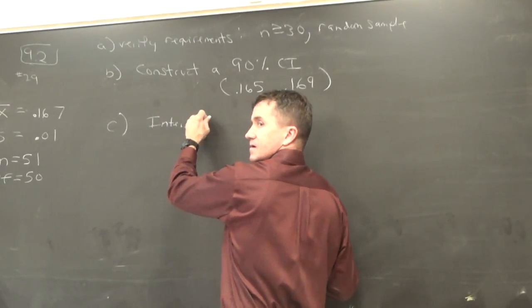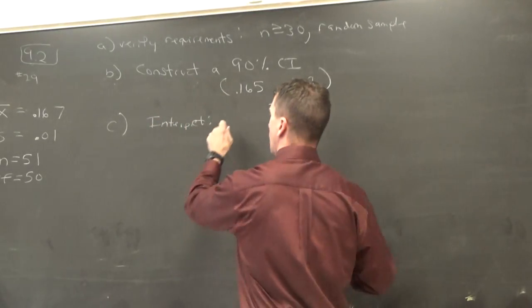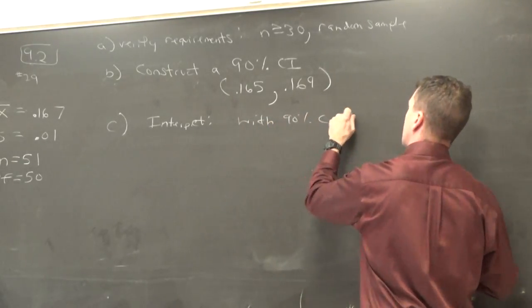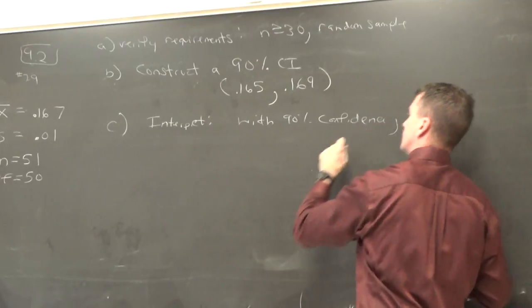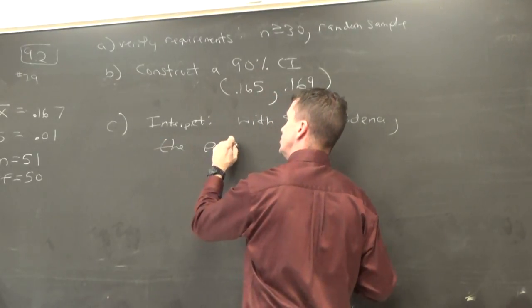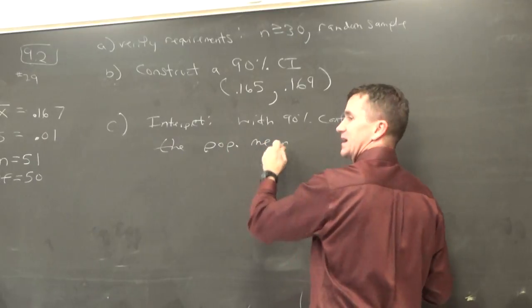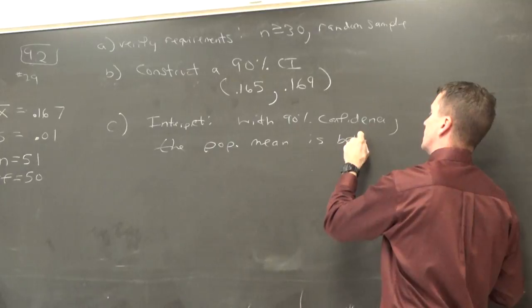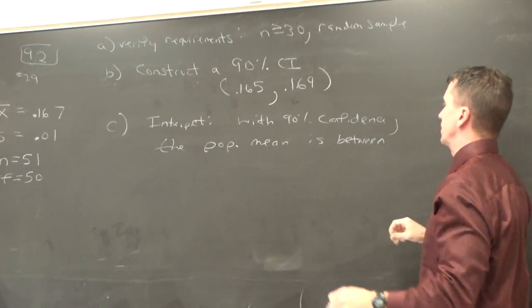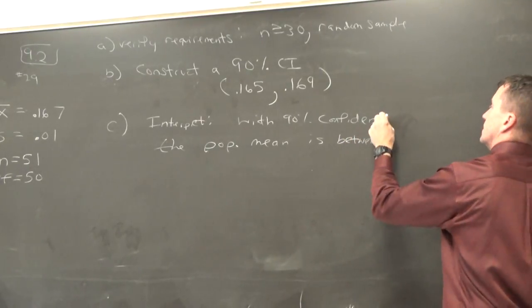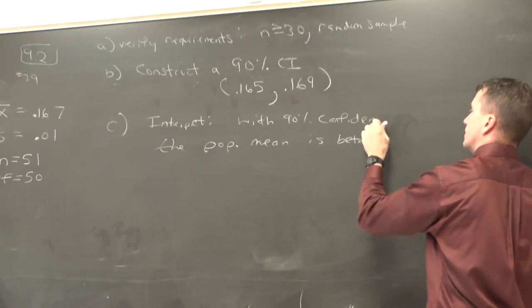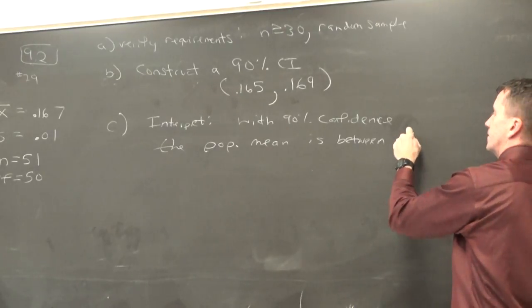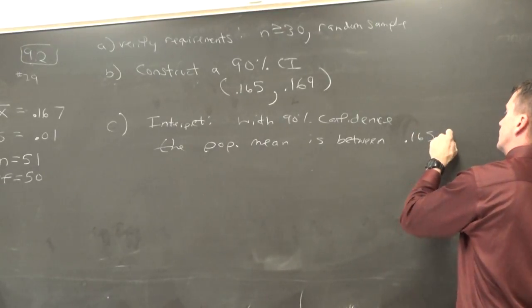Anybody want to interpret that? With 90% confidence, the population mean is between. The population mean, not the sample mean. We know about the sample mean. The population mean where alcohol is involved is between 0.165 and 0.169. You got it.